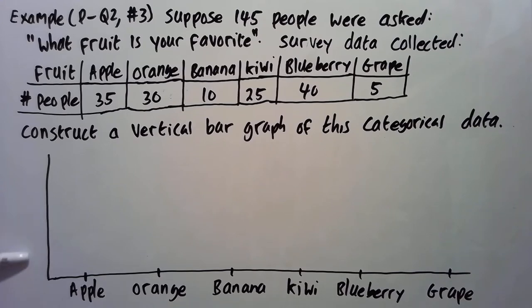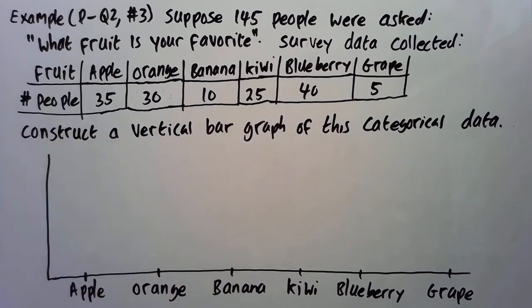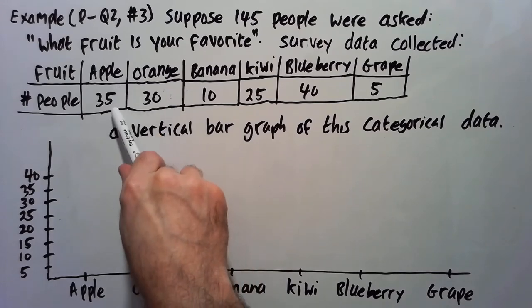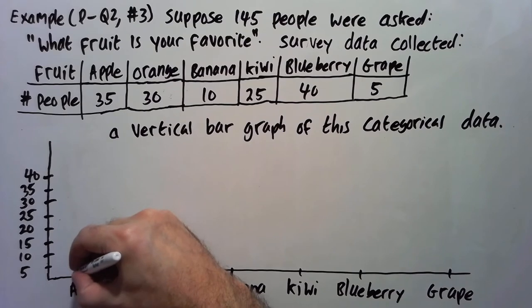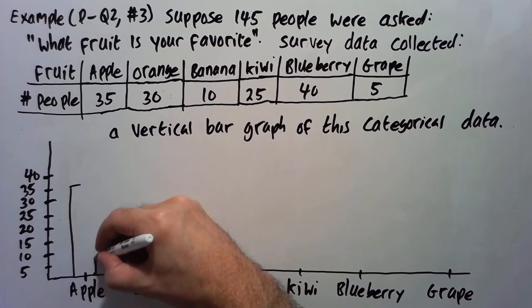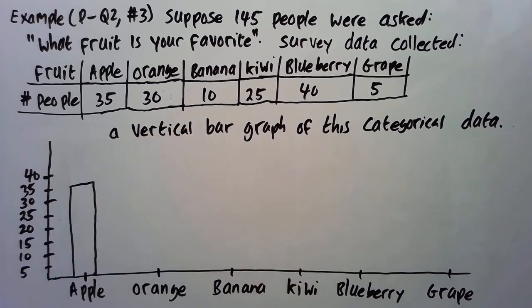And on the y-axis now, I'm going to have my frequencies. So I'm going to go by increments of 10. Because we have 5 all the way up to 40. Actually, I went by increments of 5 on the y-axis here. So now the apple has frequency 35. So we're going to draw a rectangle of height 35.